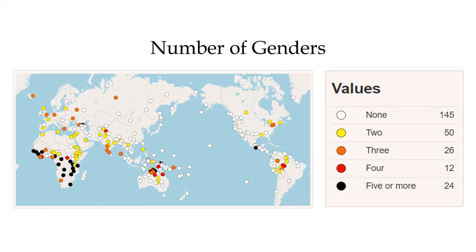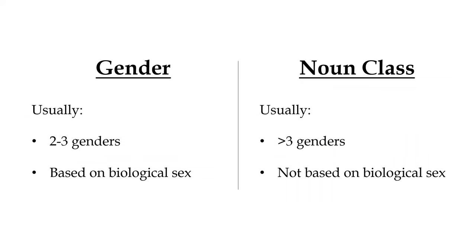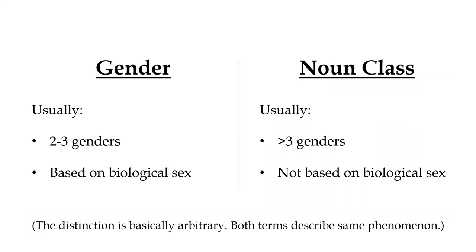Grammatical gender is a surprisingly widespread phenomenon, existing in some form in almost half of the world's languages. The term gender is also sometimes used interchangeably with the more general term class, although class is sometimes used specifically for languages with more than three genders, or for languages that don't base gender distinctions on biological sex, but we'll get more into that later on.